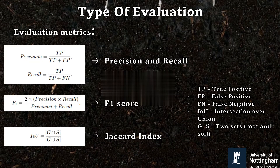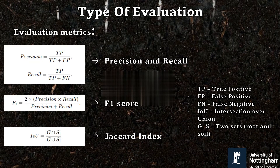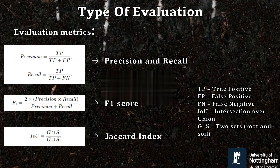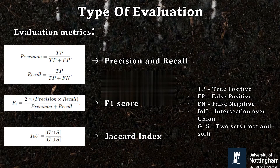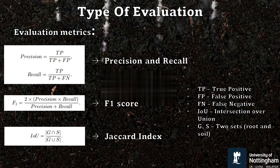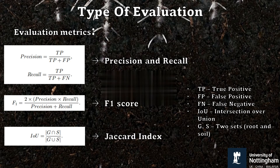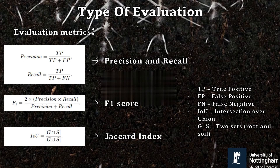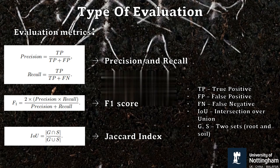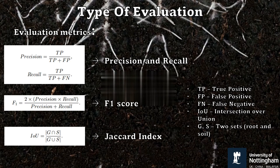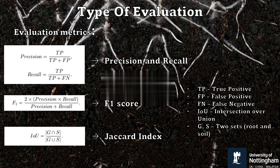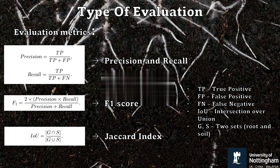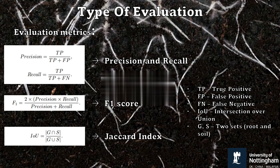The metrics related to true negative success — that is, classification of soil — are not considered as they are always close to one and less helpful. Precision is the ratio of correct root predictions to the total number of roots predicted. Recall is the ratio of correct root predictions to the total number of root predictions that were needed in the actual case.